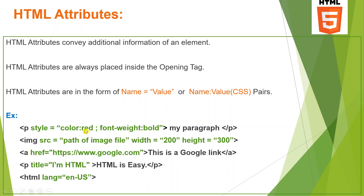Inside the style attribute, you give name-value pairs. The name is color and the value is red. If you want more than one attribute value, separate them with a semicolon. Then font-weight — font-weight means the font appearance: italic, bold, underlined, etc. Here font-weight is bold. These are all CSS name-value pairs, which are very commonly and frequently used for styling.